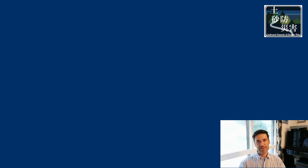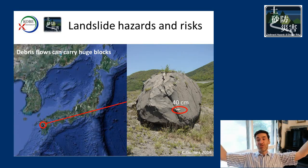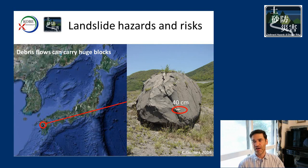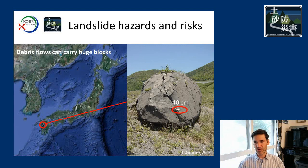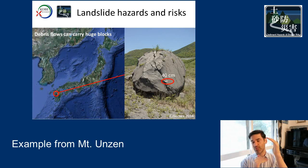First, you have to remember that debris flow, even if it's a small event — maybe only that thick — can carry huge blocks the size of a small car. Here we are back at Mount Onsen where you can see a rock which is several meters in size that has been transported by a debris flow that was much smaller.